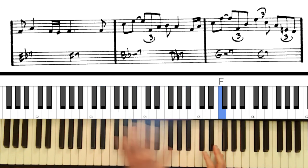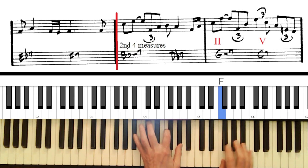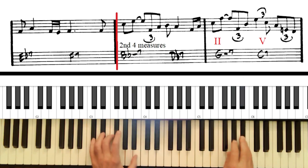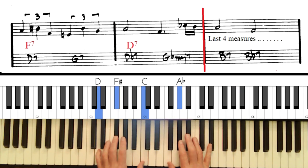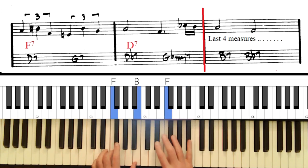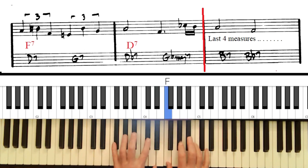Then we get to the four chord, which happens to be a minor, but that's not too uncommon for the blues. And that's the next four bars.